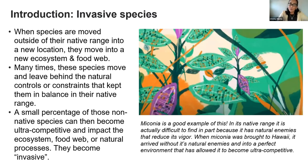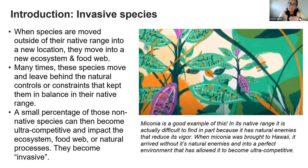A small percentage of those species, when moved into a new area, come without those natural controls, find themselves in the perfect environment, and have the tools and inclination necessary to become invasive. Miconia is a great example. In its native range, it's actually quite difficult to find, partly because it has natural enemies that help keep it under control. Some of these are so specific — so used to only being on Miconia — that they don't use the rest of the ecosystem. Miconia is their particular Achilles heel.